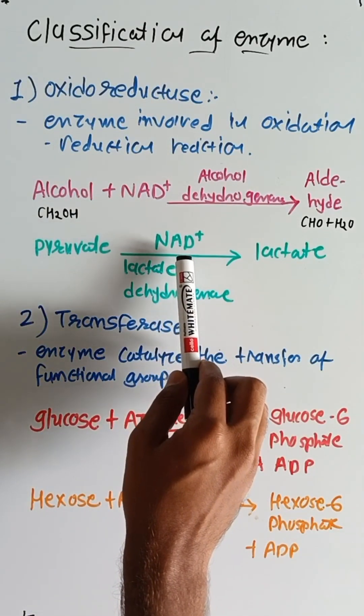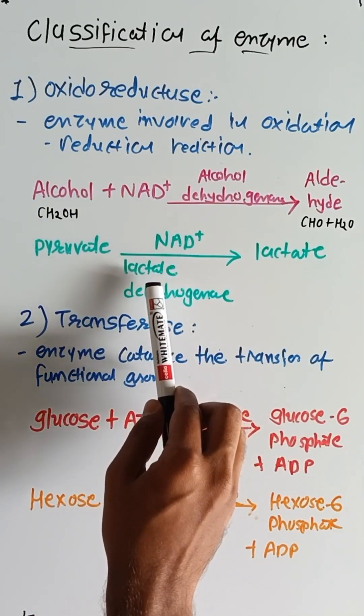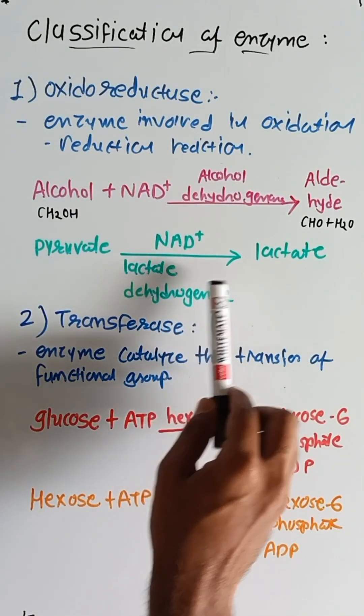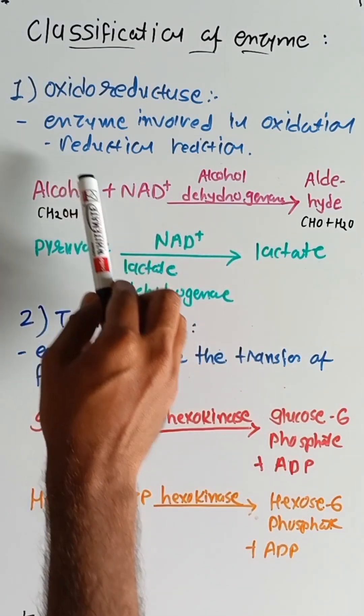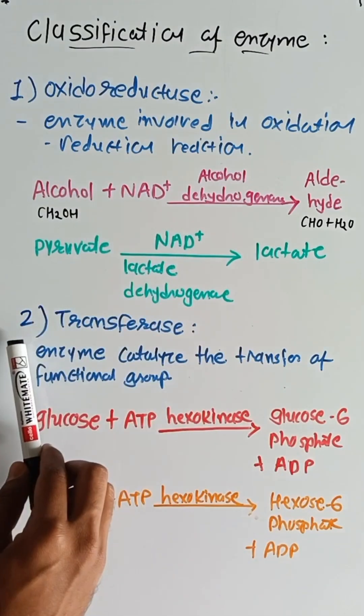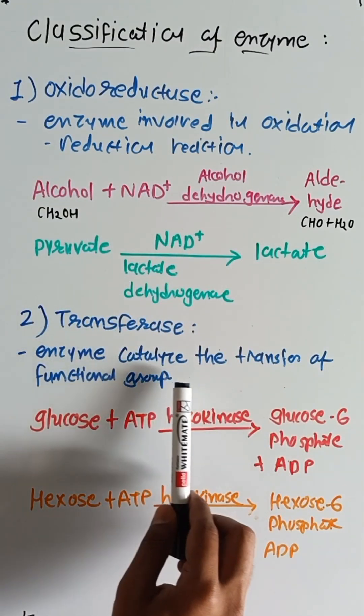Similarly, using NAD+ and lactate dehydrogenase, pyruvate is converted into lactate. This is the oxidoreductase class. The second class is transferases — enzymes that catalyze the transfer of a functional group.